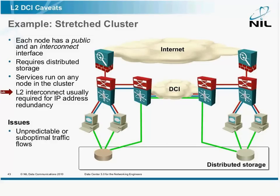What happens if you have a stretched cluster like this? Number one, you could get suboptimal traffic flows, because traffic would go one way and then to this side and then out here, in which case it would probably fail because of the firewalls. So it might have to go out another way and so on.